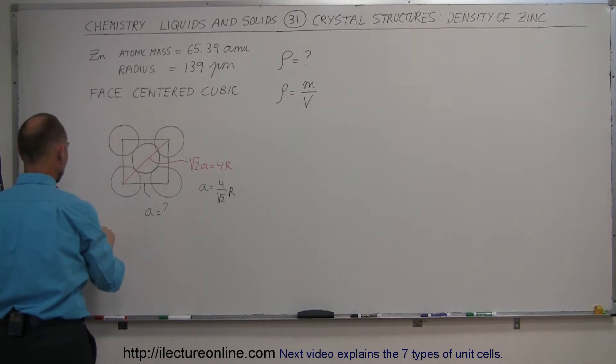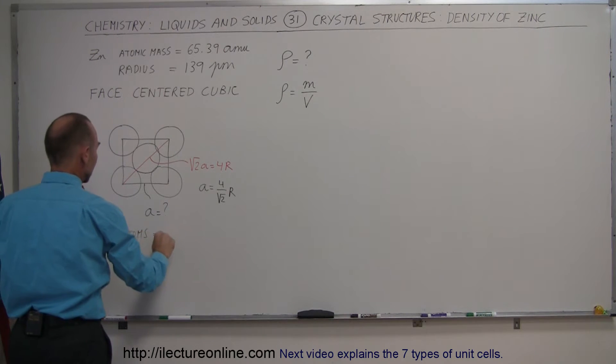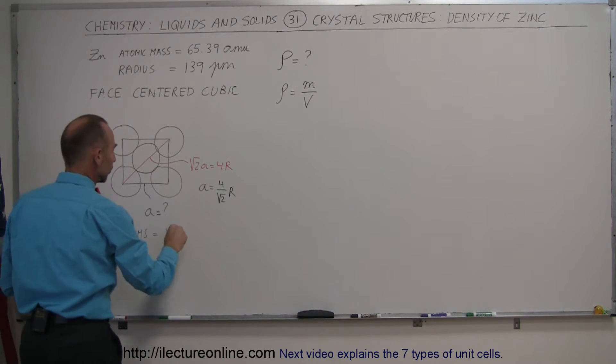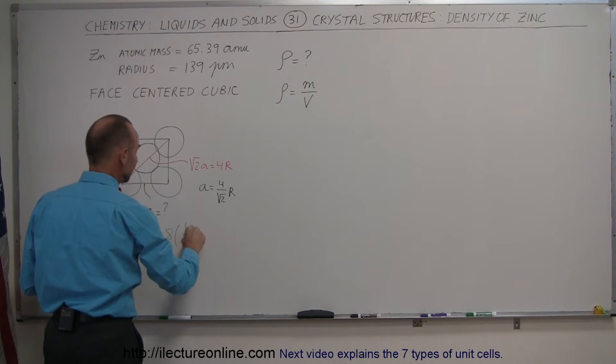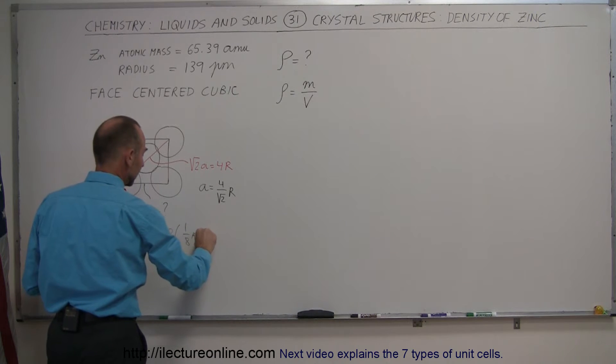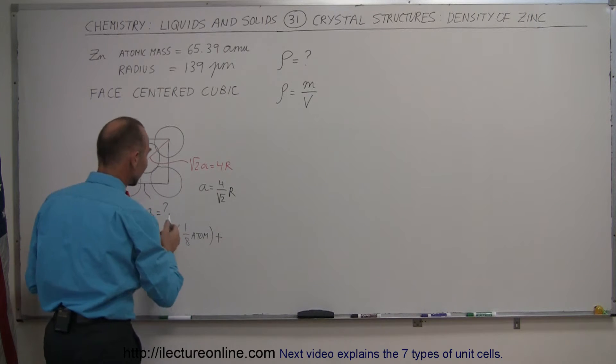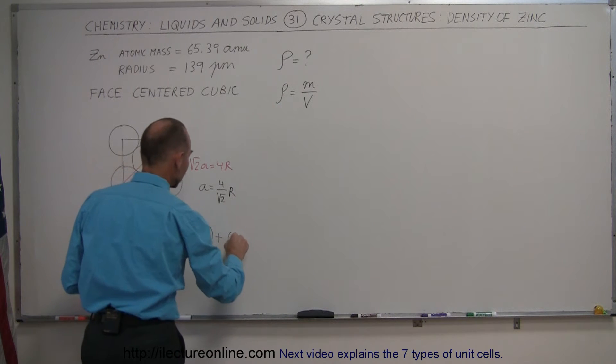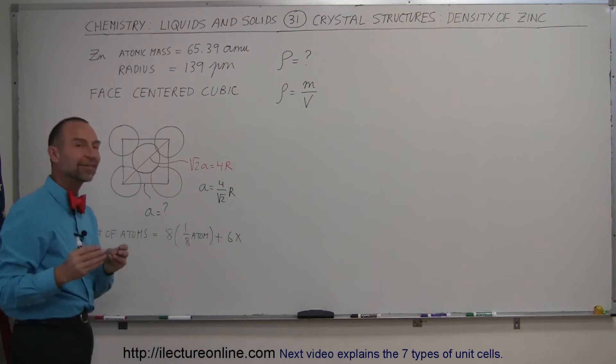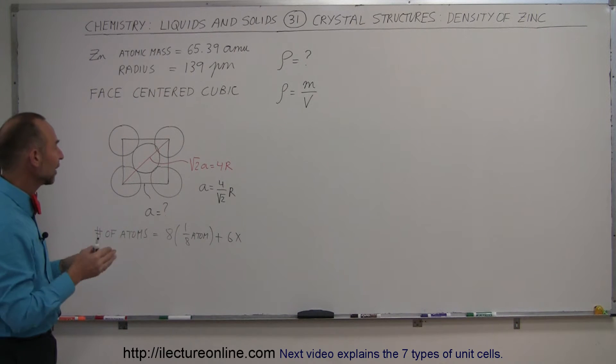For the number of atoms, that is eight times, because there's eight corners, times one-eighth of an atom at each of the corners, plus there's six sides. Therefore, we multiply six times the portion of each atom that is inside the cube versus outside the cube.